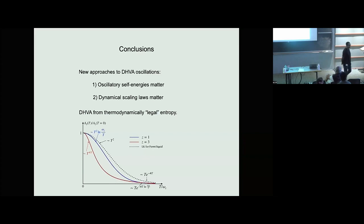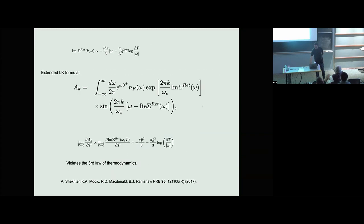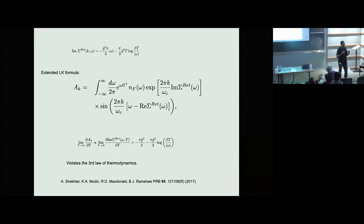A question about the entropy calculation: the self-energy is a highly singular function of frequency that also gets rounded out at the same temperature scale, and there's omega-over-T scaling up to logs. What we're doing is keeping the full self-energy — both the oscillating and non-oscillatory parts — but expanding in the oscillatory parts, essentially redoing what Lifshitz-Kosevich did. When you compute the entropy by taking the temperature derivative, only the Fermi function matters — that's claimed to be an exact statement, though it warrants detailed verification.